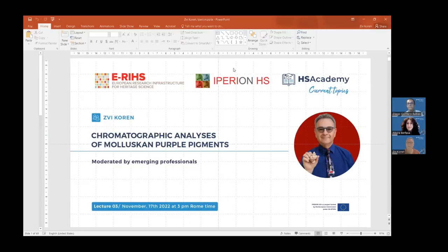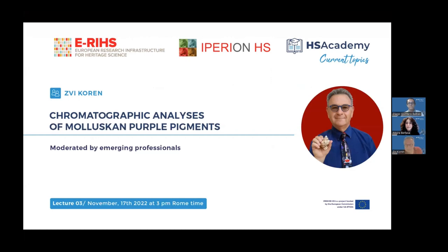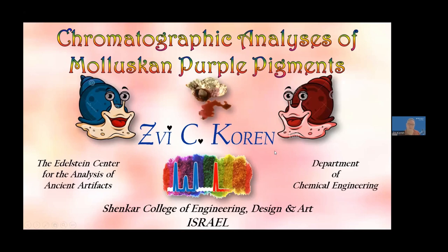Professor Koren opens by noting that today's topic is two-fold: a bit of chromatography and a lot of purple pigments — a two-pronged approach. The slide title reads 'Chromatographic Analyses of Molluskan Purple Pigments,' broadcast live from Ramat Gan, Israel, where he directs the Edelstein Center for the Analysis of Ancient Artifacts at the Department of Chemical Engineering at Shenkar.